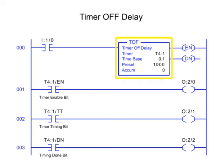The timer off delay instruction is used to turn an output on or off after the timer has been off for the preset time interval.